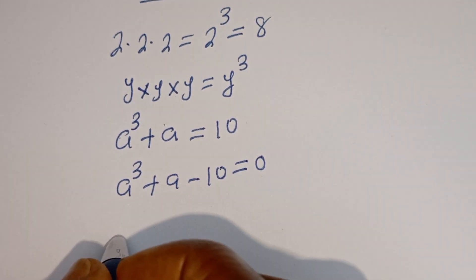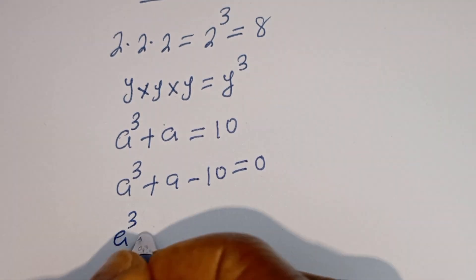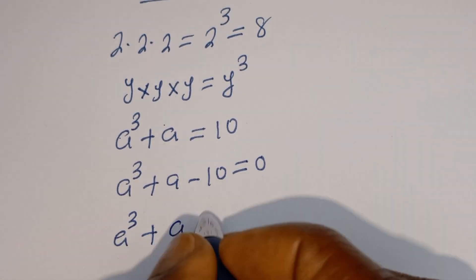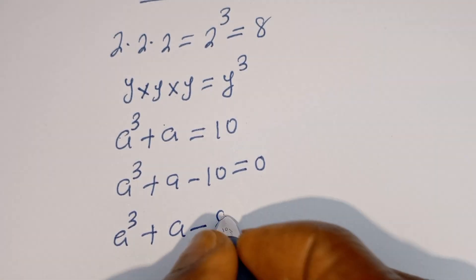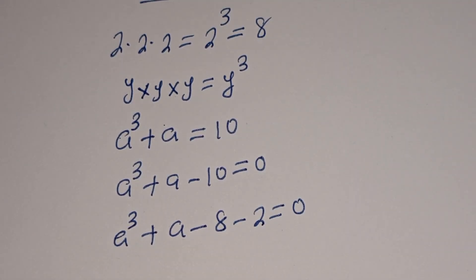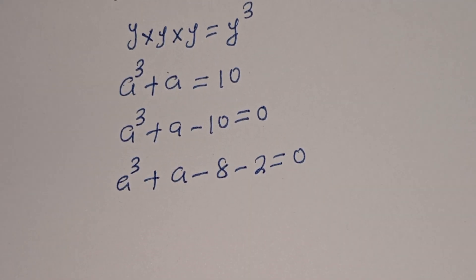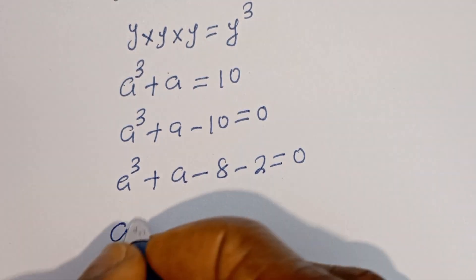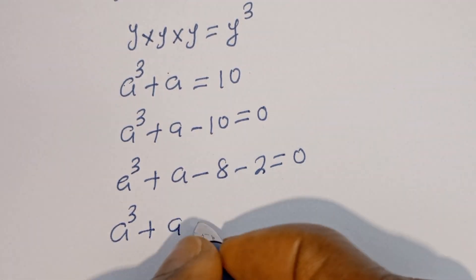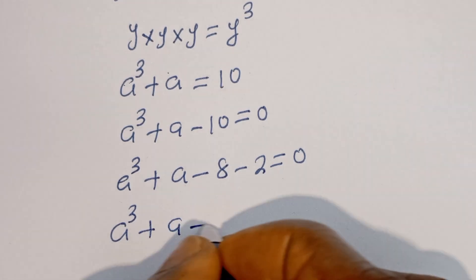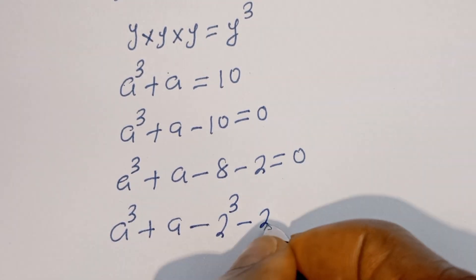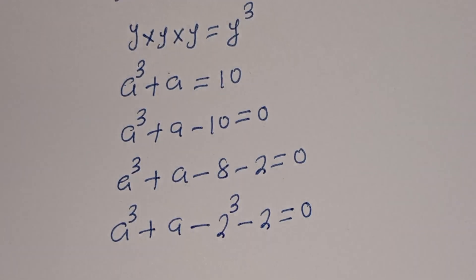Here we have A³ + A - 10 = 0, which can be rewritten by splitting: -10 becomes -8 minus 2, giving A³ - 8 plus A minus 2 is equal to 0. And -8 can be written as -2 to the power of 3.